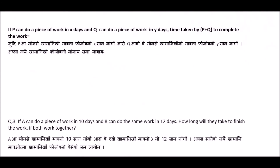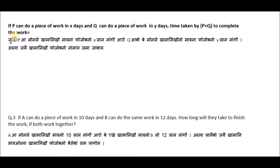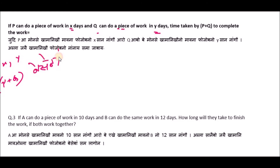The next formula: if P can do a piece of work in X days and Q can do a piece of work in Y days, the time they need together — P plus Q — to complete the work is x into y divided by x plus y.